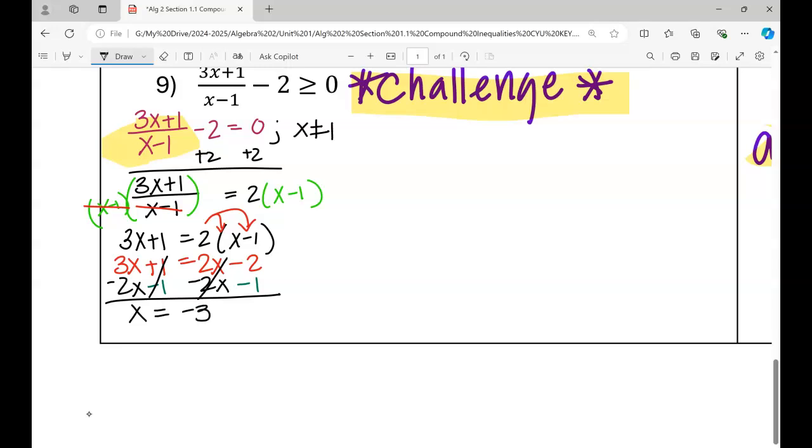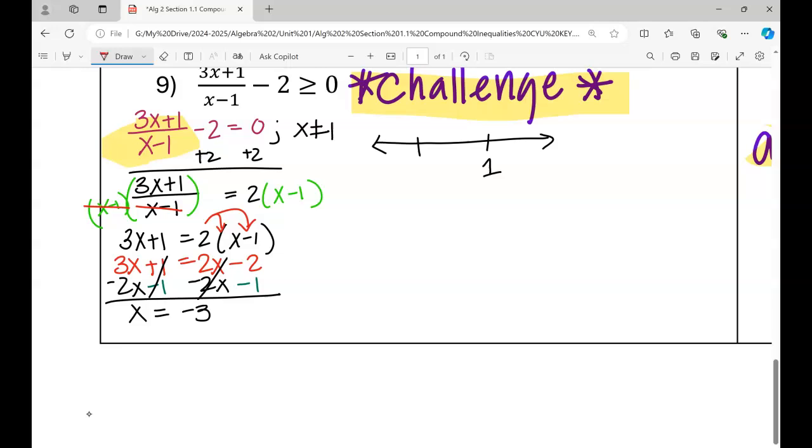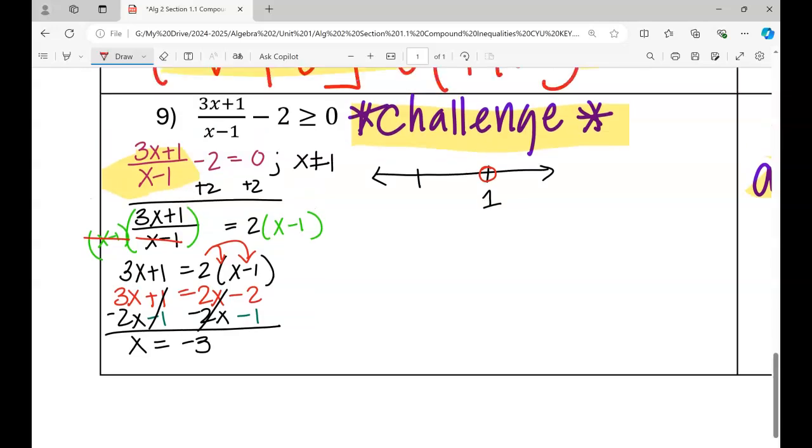But here's why it's difficult. We know that on our number line, x could never, ever be 1. 1 needs to be excluded from our solution set. So it's immediately going to have a hole. We know x is going to be bigger than negative 3. So that's inclusive. So we currently have 3 sets of solutions. It could be here, it could be here, and or it could be here.